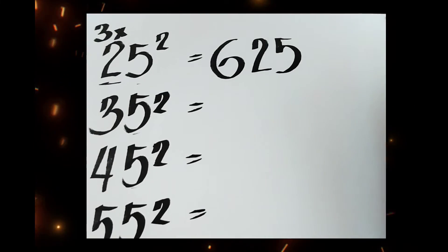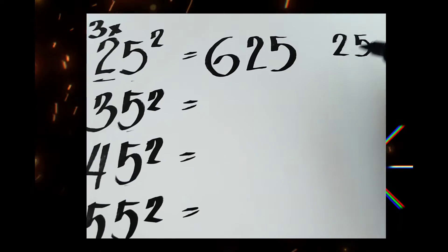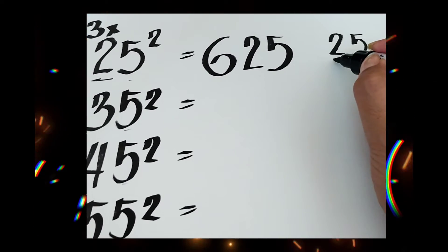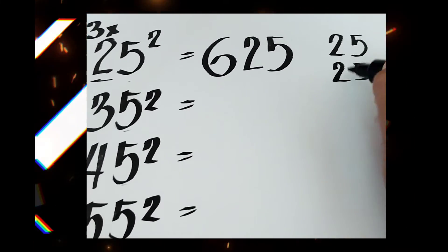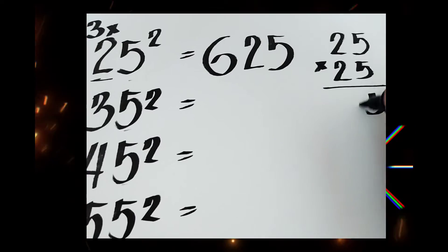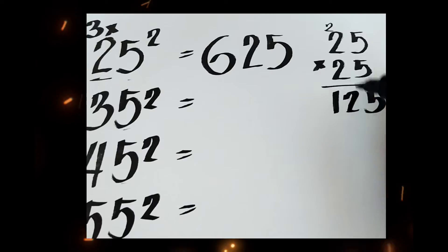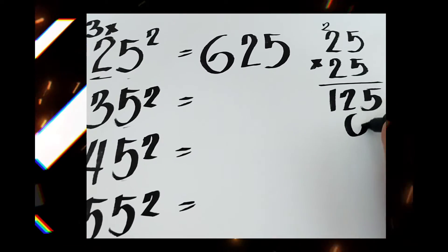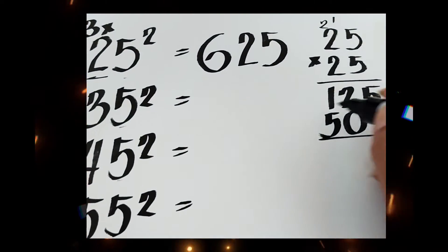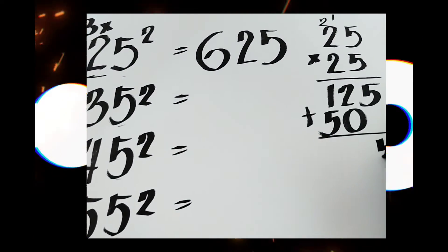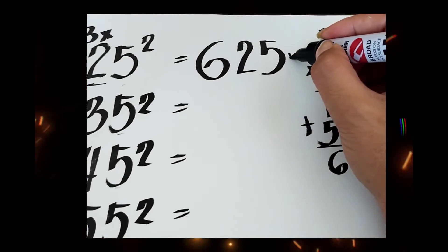Let's check it manually if our answer is correct. Let's multiply 25 times 25. 25 squared means 25 times 25. So 5 times 5 is 25, carry 2. 5 times 2 is 10, plus 2 is 12. 2 times 5 is 10, carry 1. 2 times 2 is 4, plus 1 is 5. Now let's add: 5, 2, 6. So the answer is the same - our answer is correct.